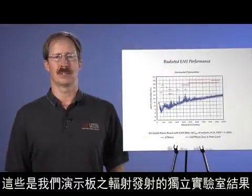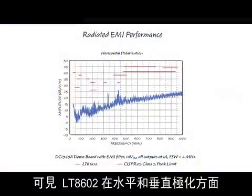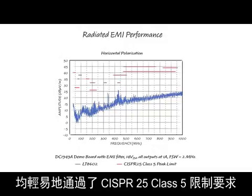These are the independent lab results for the radiated emission of our demo board. As you can see, the LT8602 easily passes CISPR25 class 5 limits in both horizontal and vertical polarizations.